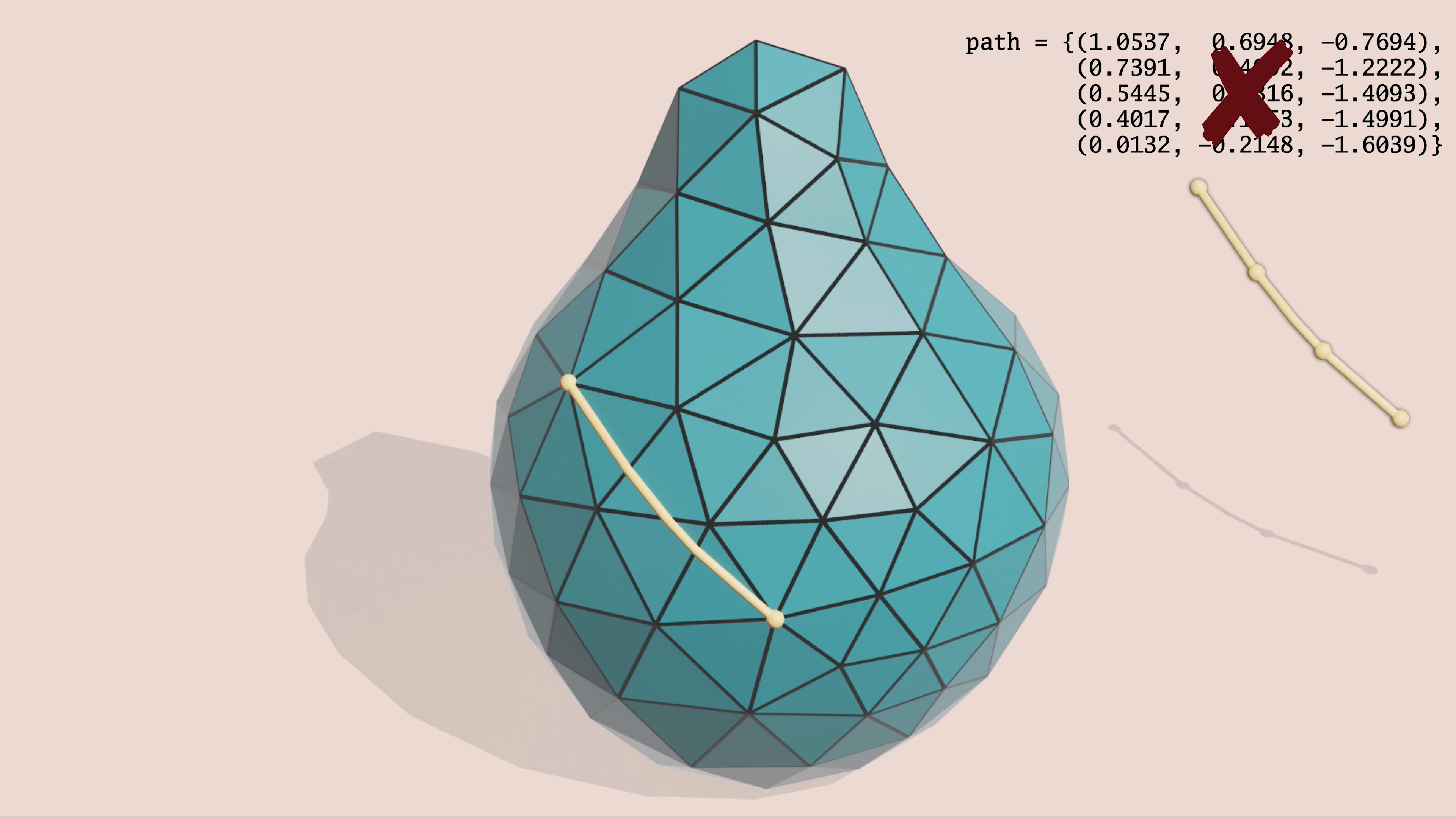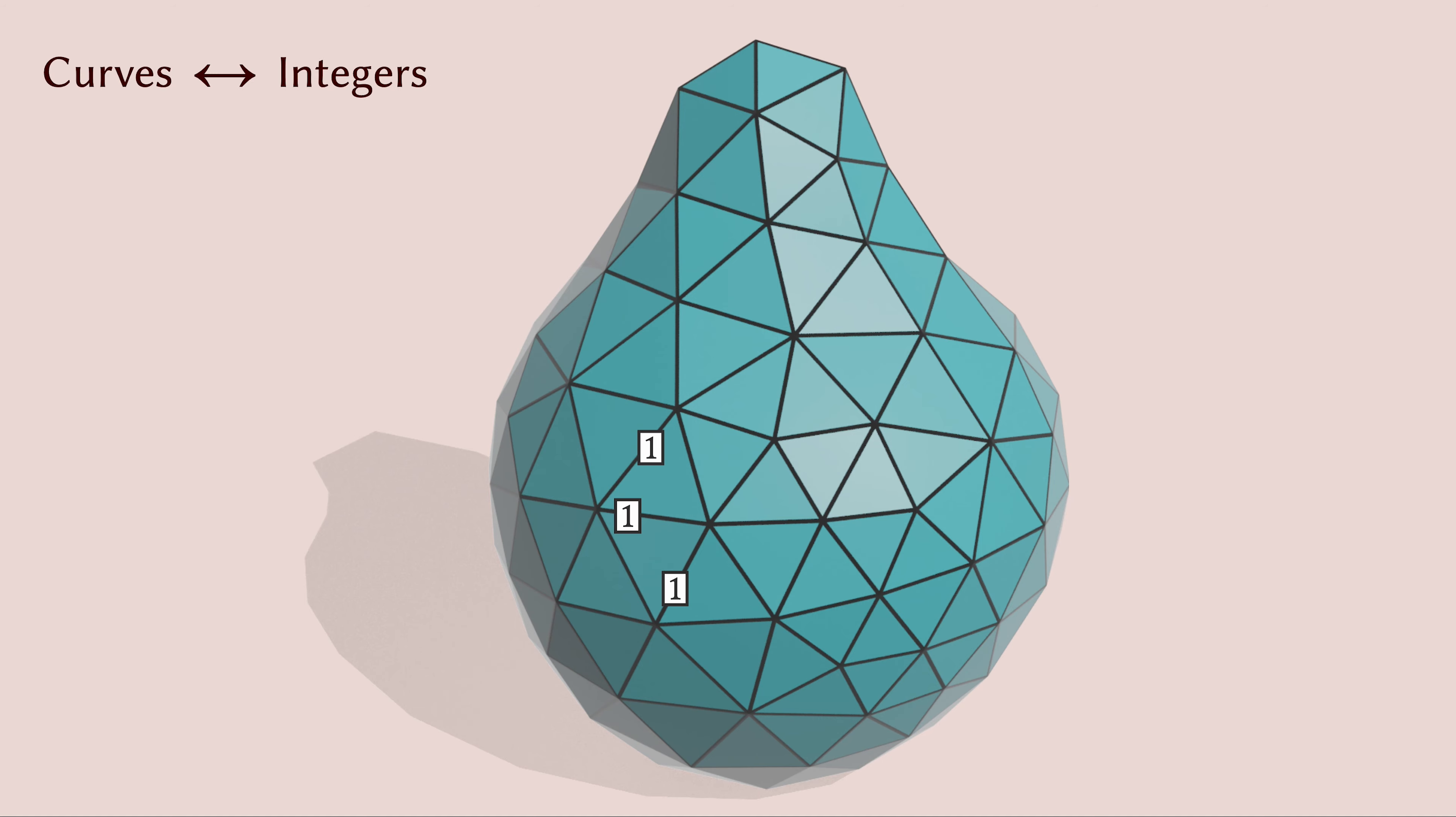Geometric topology provides us with a better way. All we have to do is count how many times the curve crosses each edge of the mesh. Amazingly, these counts alone allow us to reconstruct the curve exactly.